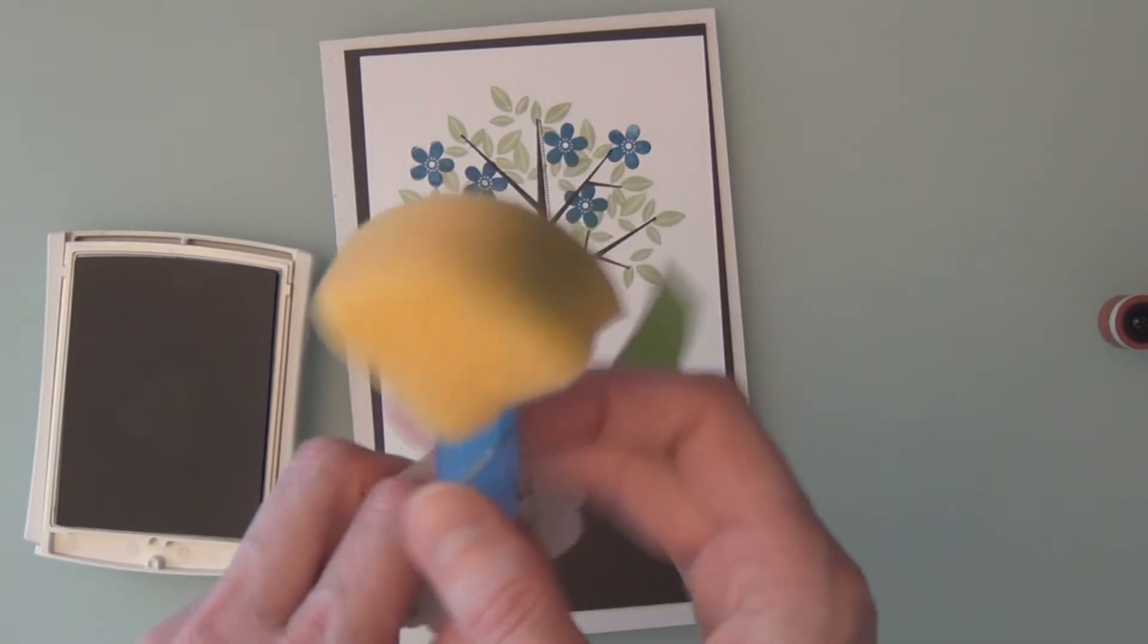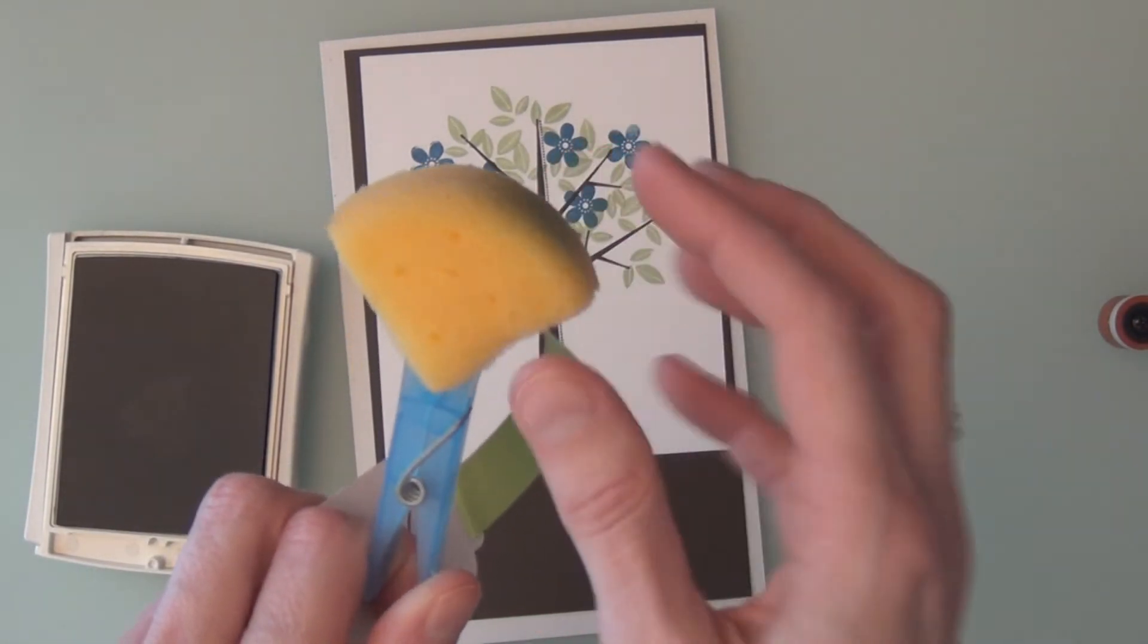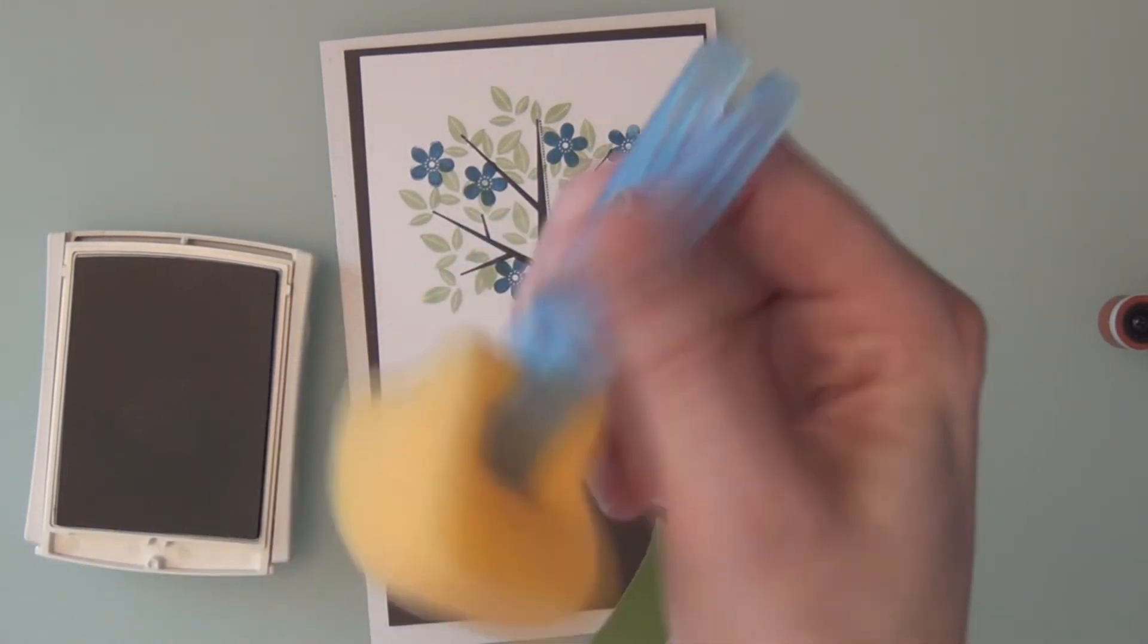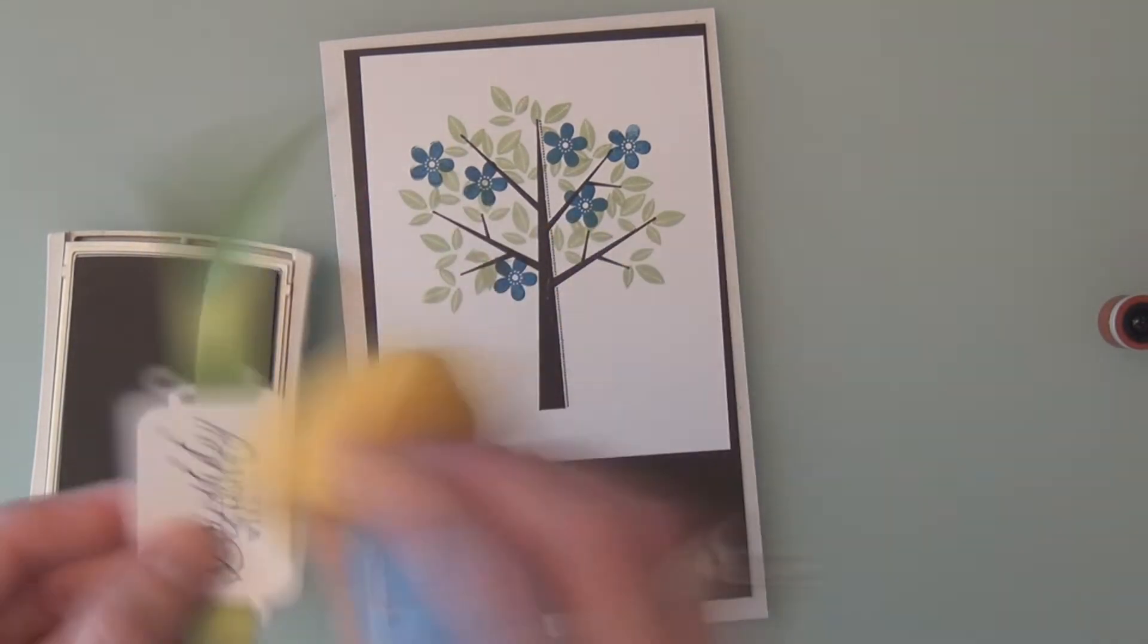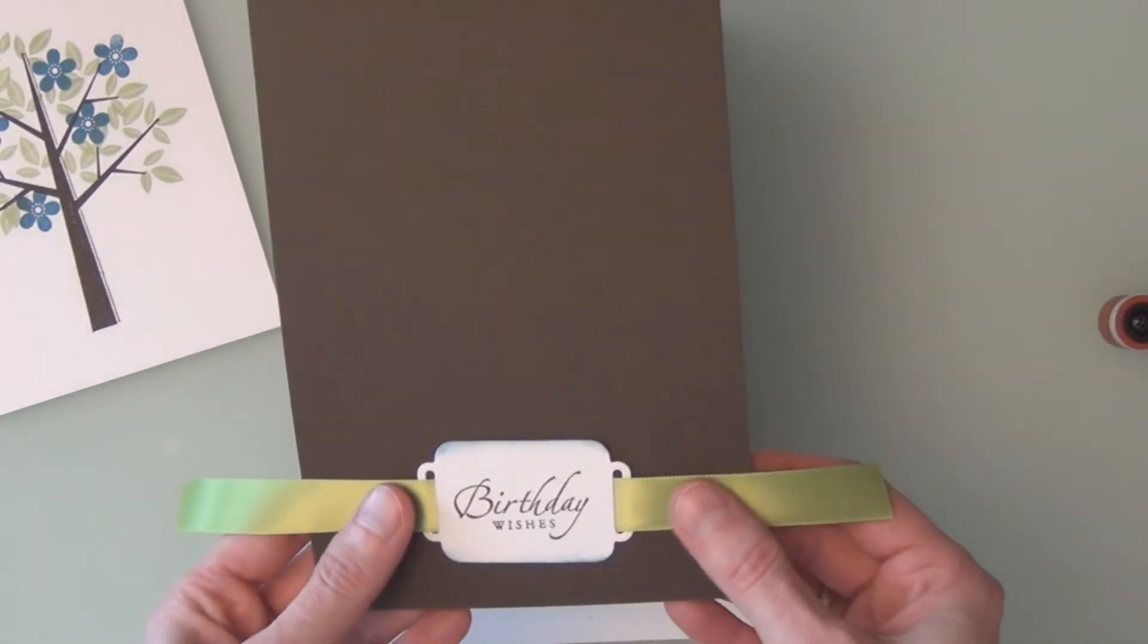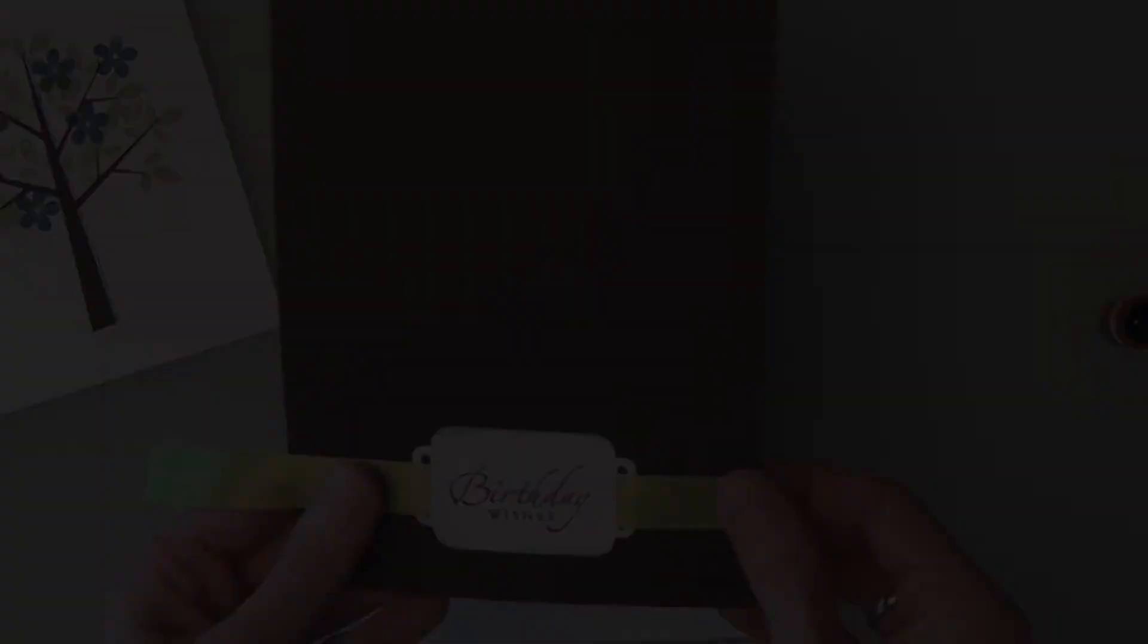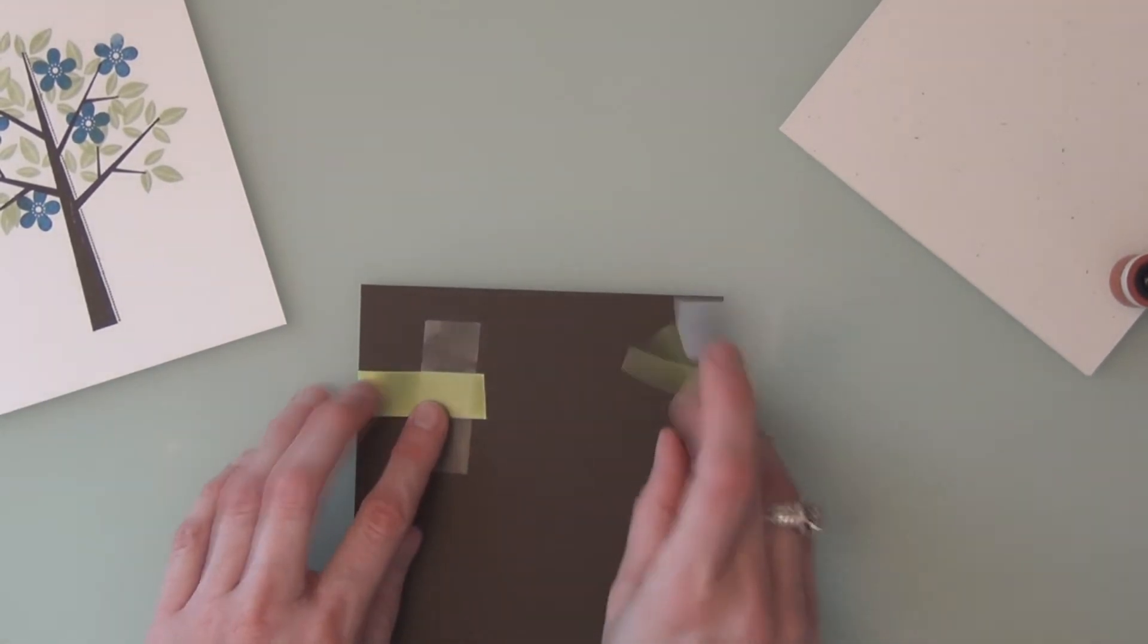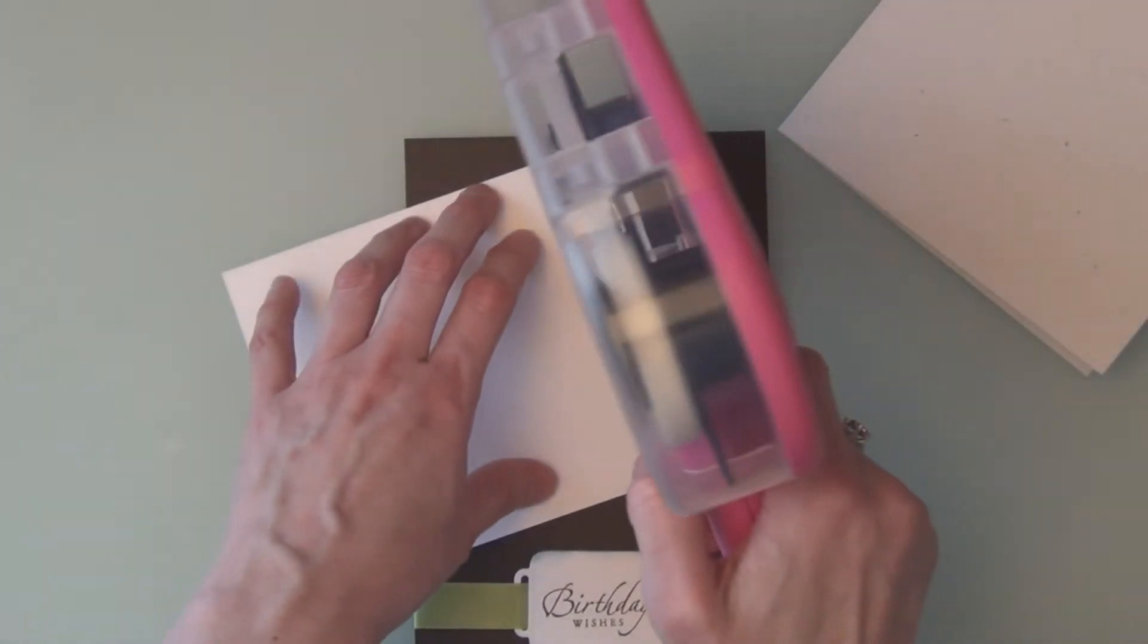So, this is a Stampin' Up sponge. I've cut it into four pieces and just attached it to a clothespin. And I'm going to cheat and just tape this. Get out my ATG again.